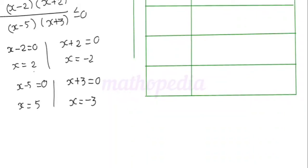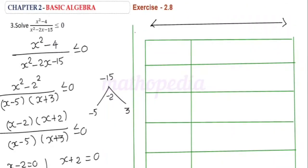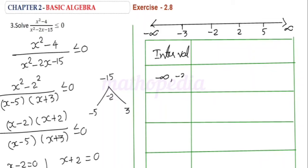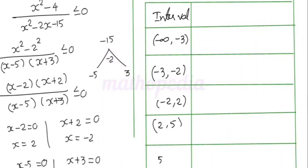Now draw a number line and mark these numbers: -3, -2, 2, and 5. This gives us the intervals: (-∞, -3), (-3, -2), (-2, 2), (2, 5), and (5, ∞).